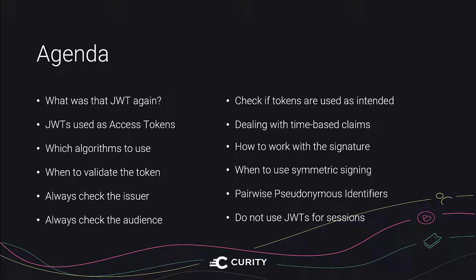First, I will quickly go over the basics of JWTs, and then focus on the 11 best practices, which are: JWTs used as access tokens, best practices concerning signing and encryption algorithms, when to validate the token, why we should always check the issuer and audience claims, check whether the tokens are used as intended, how to deal with time-based claims, how to work with the signature, when can you use symmetric signing, a few notes about PPID (Pairwise Pseudonymous Identifiers), and finally, why it's not a good idea to use JWTs for sessions.